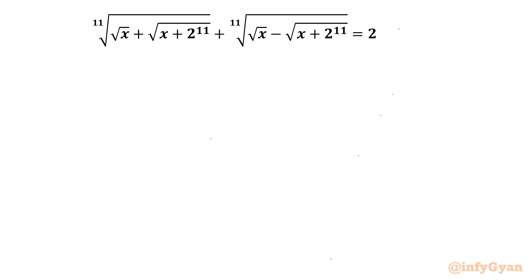Welcome back to Infigyan friends. In this video we are going to take up one very interesting radical equation challenge. The equation is: the 11th root of (√x + √(x+2))^11 plus the 11th root of (√x − √(x+2))^11 equals 2. We have to find out the real solutions.